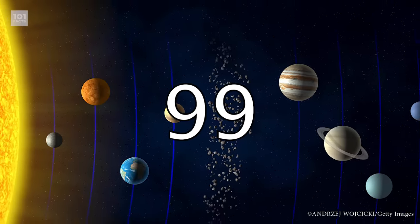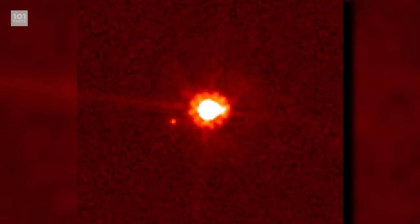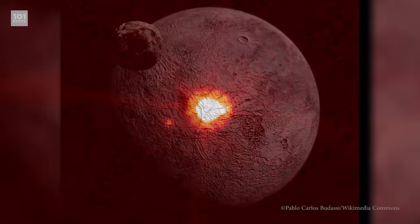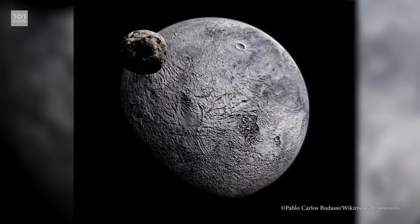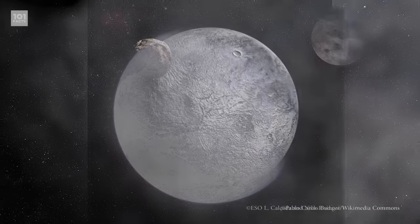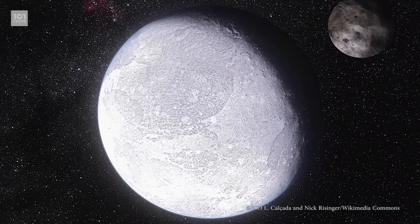The biggest thing we've found in the Scattered Disc so far is Eris, another dwarf planet. Eris has another crazy orbit that, like Pluto, is elliptical in nature, but lasts an estimated 559 Earth years.